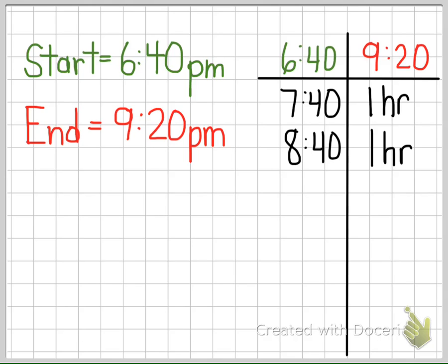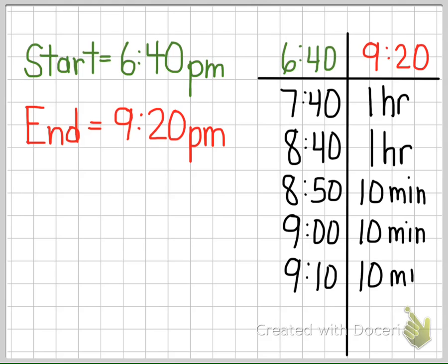Now, we can't count by hours anymore. If we did, then we would pass our end time. One more hour would be 9:40, so instead we count by minutes. An easy number to skip count by is 10, so we'll count by 10 minute intervals until we get to our end time.